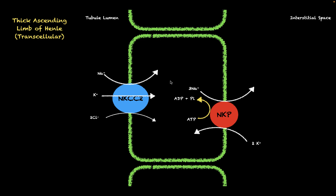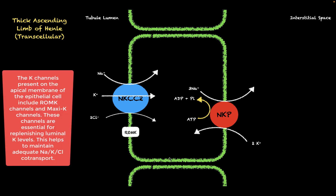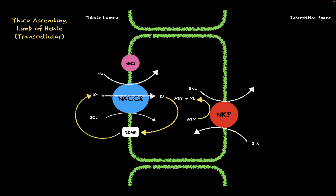NKCC2 is one of the main mechanisms by which sodium and chloride are reabsorbed transcellularly. In addition to NKCC2, there is the ROMK channel, which takes the potassium brought in by NKCC2 and recycles it back into the tubule lumen, keeping the co-transporter continuously powered. We also have the sodium-hydrogen exchanger NHE3, which couples the downhill movement of sodium into the cell to the uphill movement of hydrogen ions out of the cell — one sodium in, one hydrogen out — providing a second mechanism for sodium reabsorption.